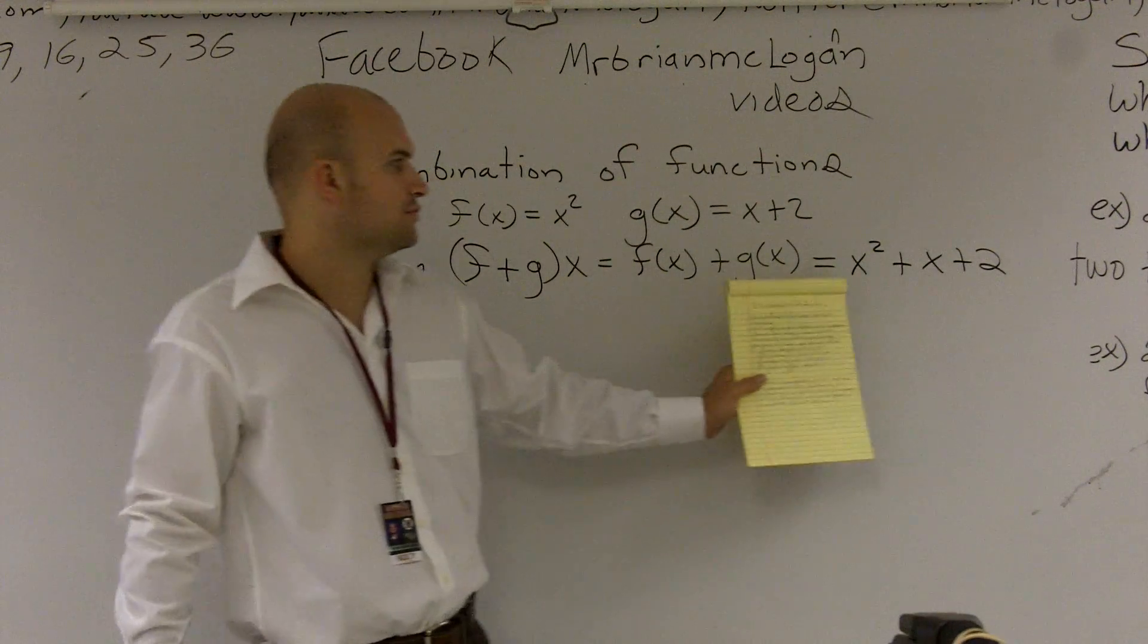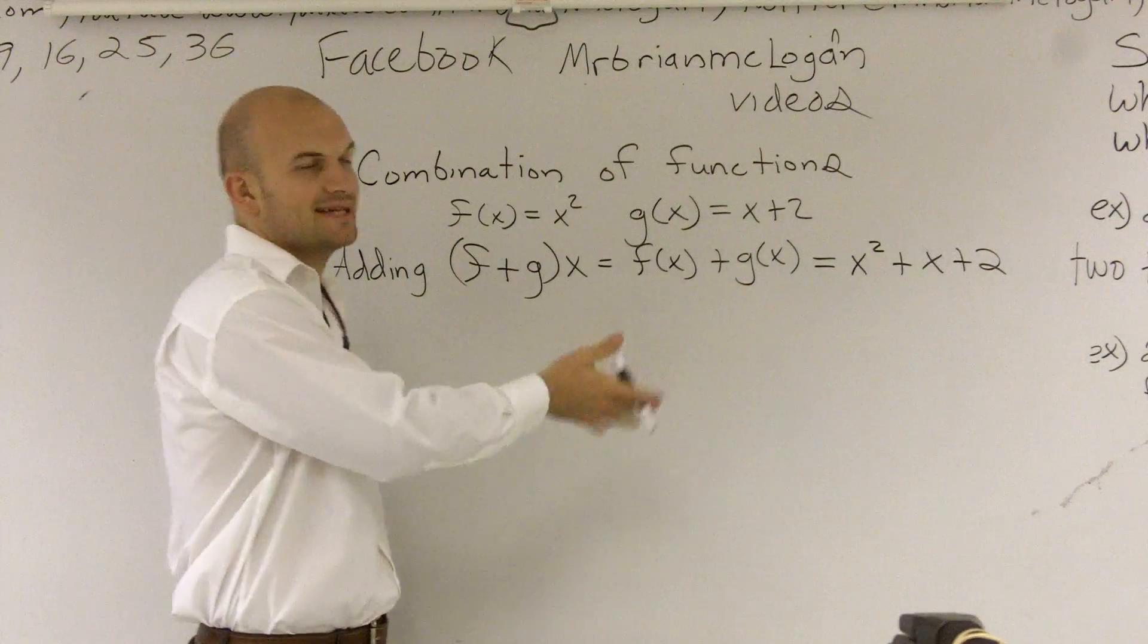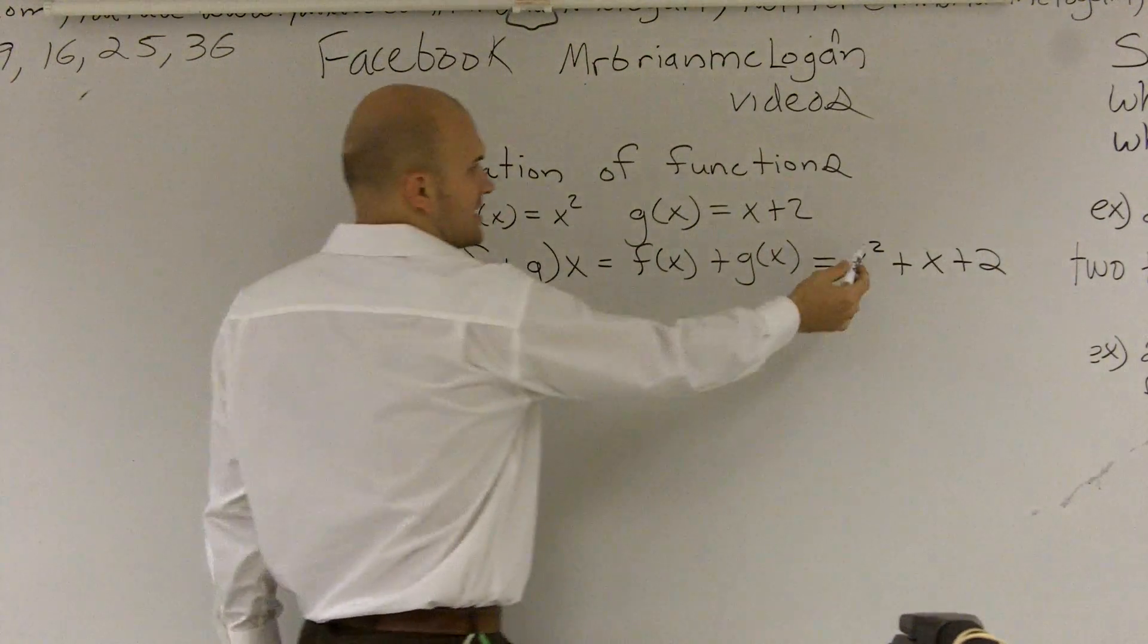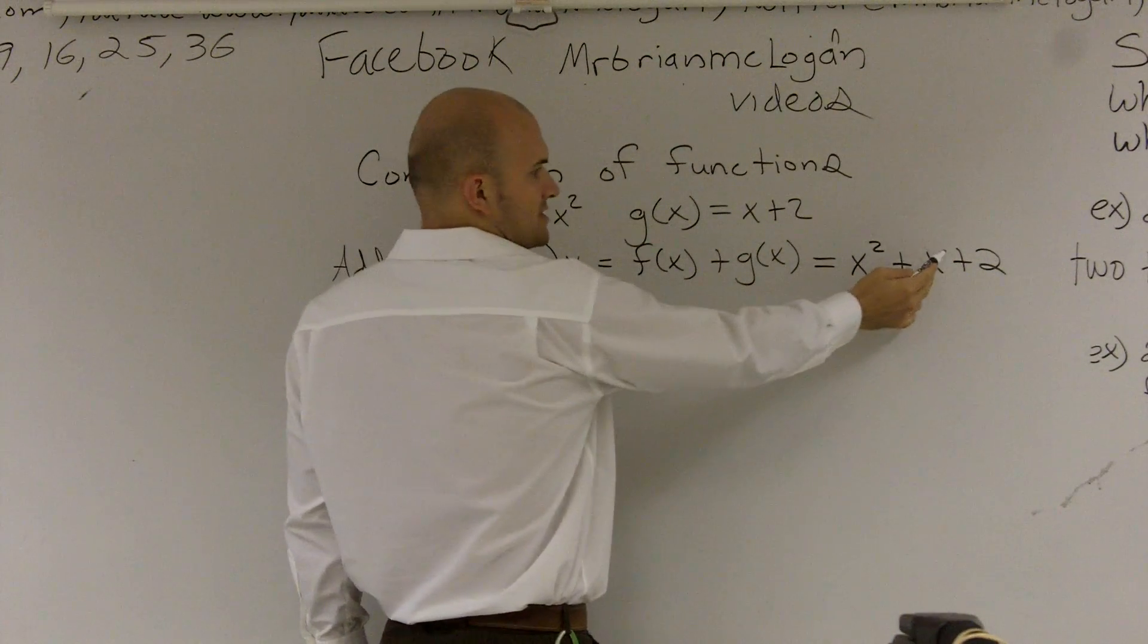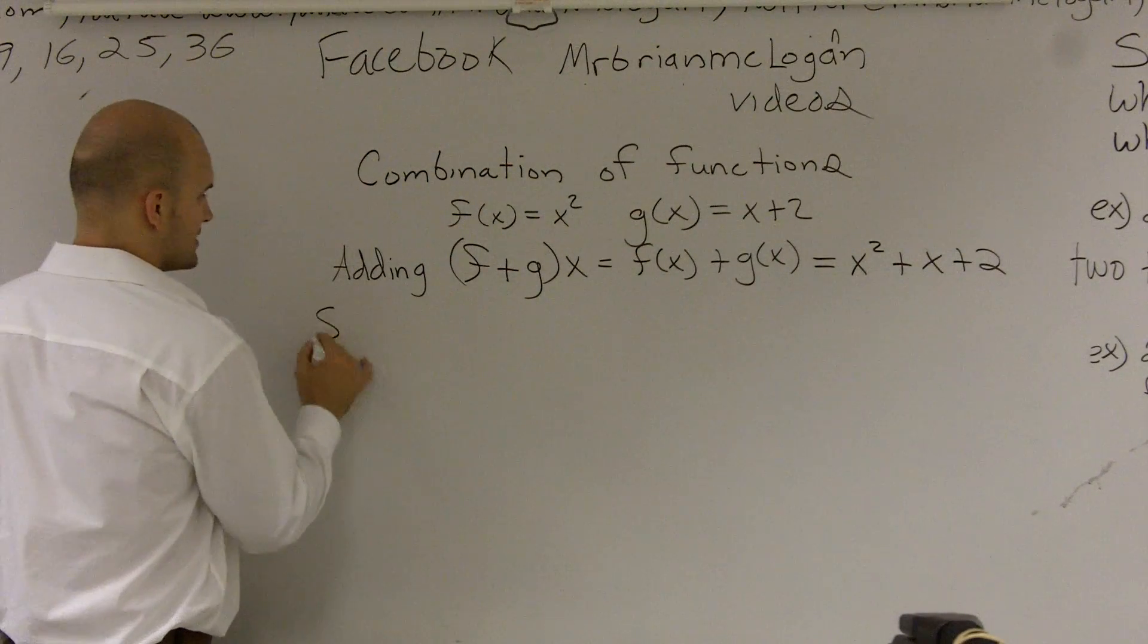Now, the next thing, if you could simplify this, you'd want to look and see, is there anything I can simplify for this problem? And in this case, there's nothing you can simplify. This has the power of 2, this is the power of 1, and then that's a constant term. The next one, let's work on subtracting.